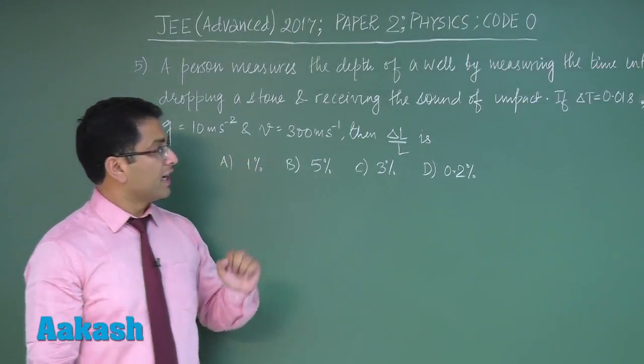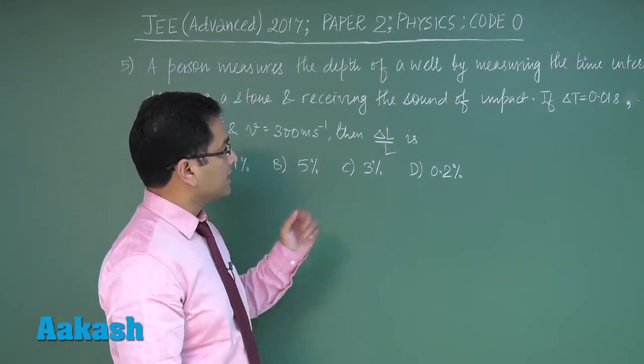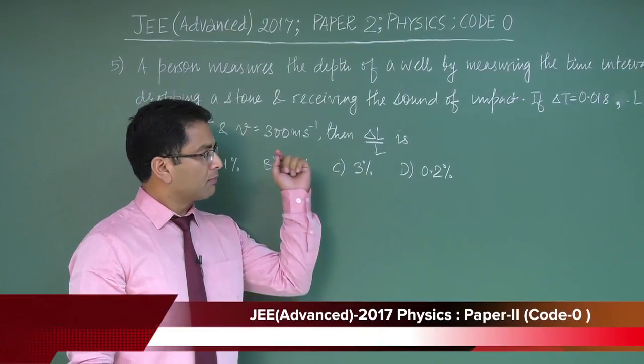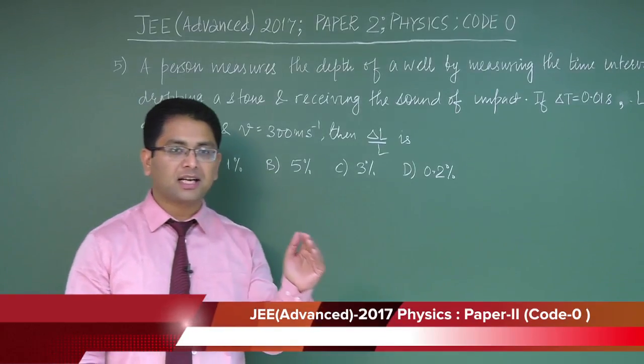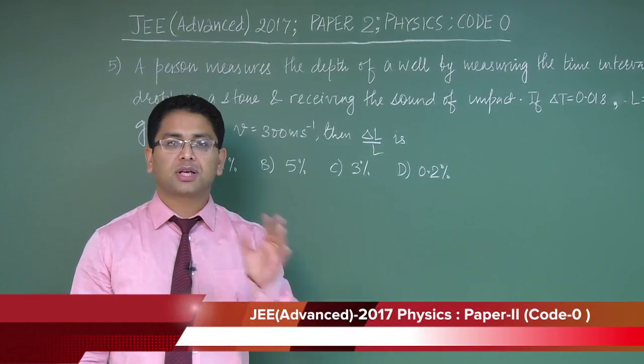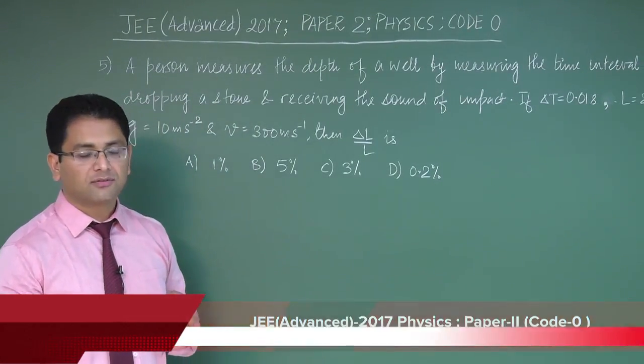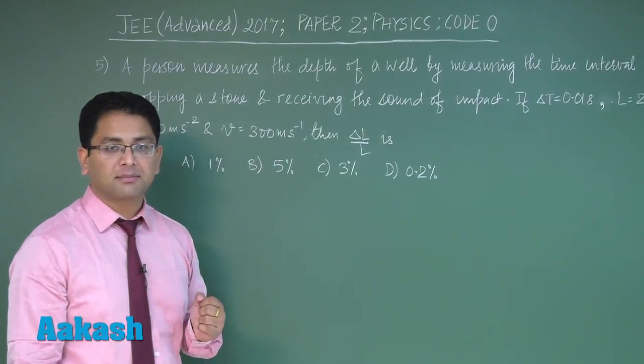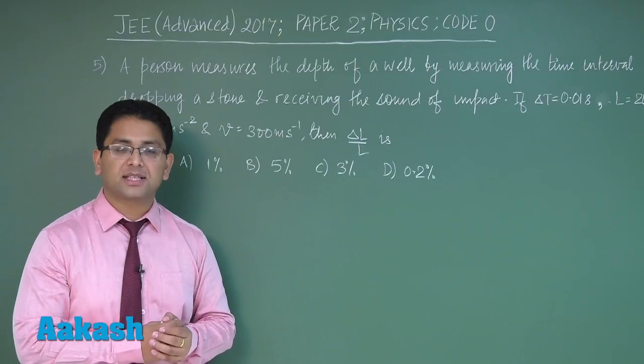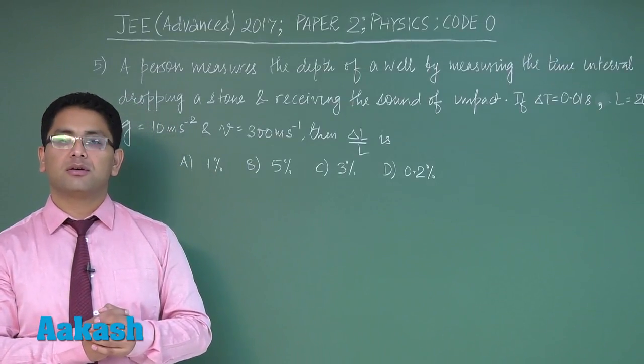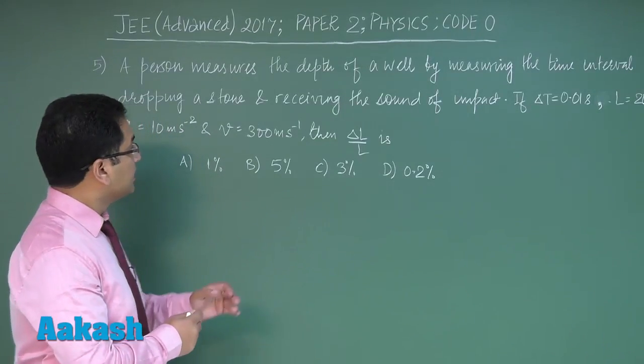Question number five from the topic of errors and measurement. By giving this particular question, JEE Advanced has again proven the trend: you can always expect one question from the topic of errors and measurement, or I should rather say at least one question, because many times the number of questions even goes more than one. Here's the question.